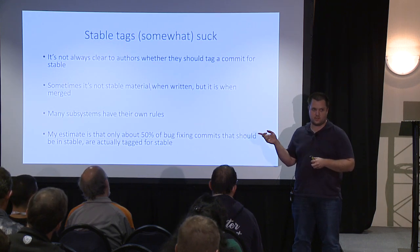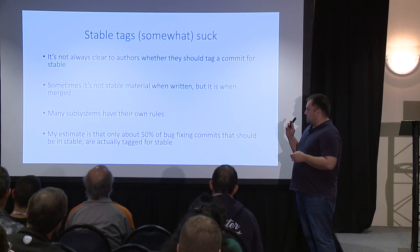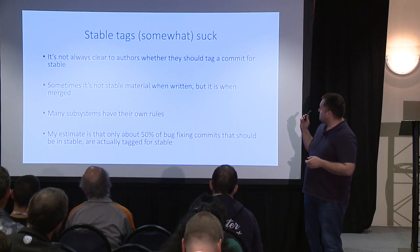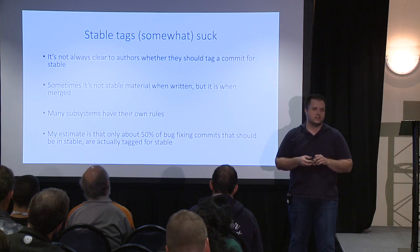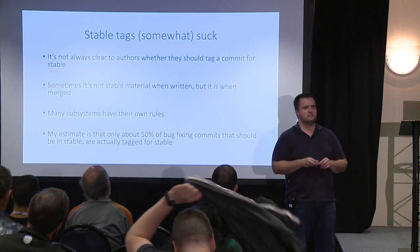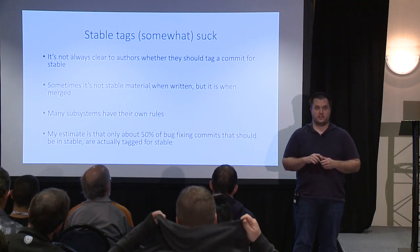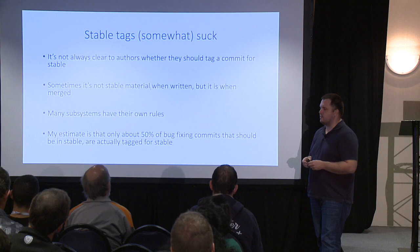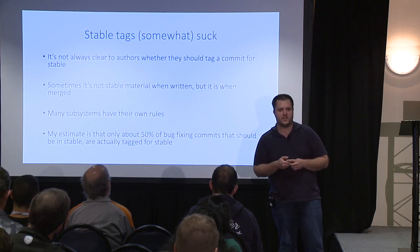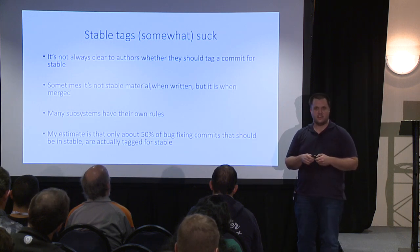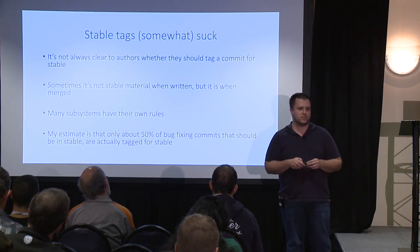Another problem is that when an author writes a patch that should be stable material, it might not be stable material at that time. For example, if you introduce the bug in the merge window and you're trying to fix it around RC7, it's not stable material — it fixes something in the current release. But if the maintainer was on vacation and only saw your patch in the next merge window, it already became stable material, but the patch itself isn't annotated that way and might make its way upstream without stable tags. Also, different people see fixes differently. The kernel runs on so many machines that even bugs that happen once in a lifetime will still happen often enough in large infrastructure and cloud providers.